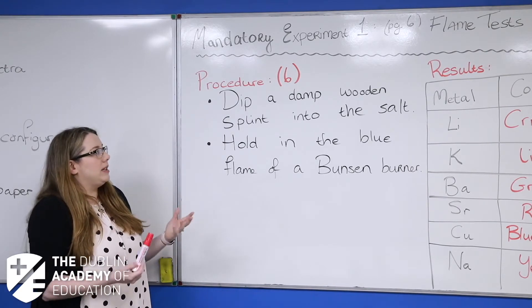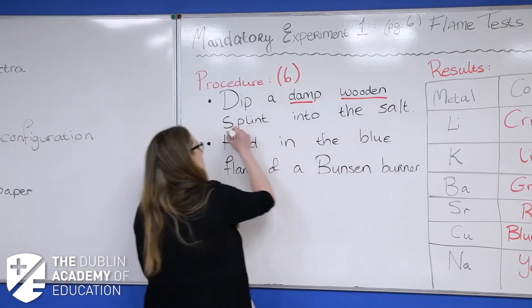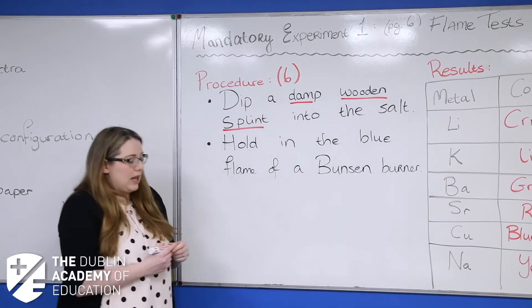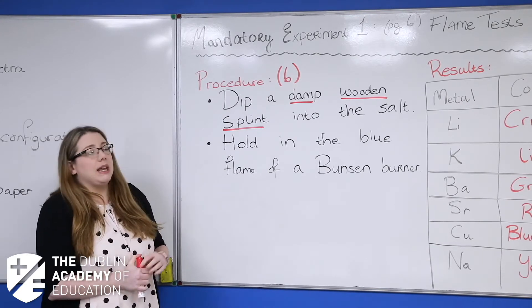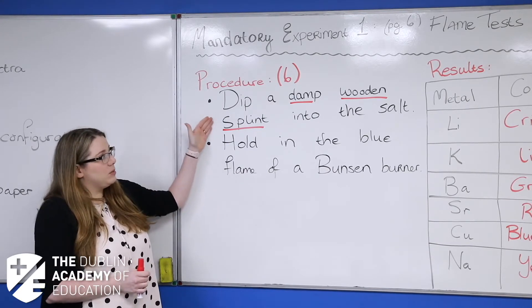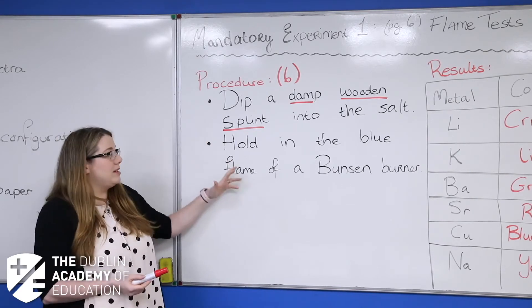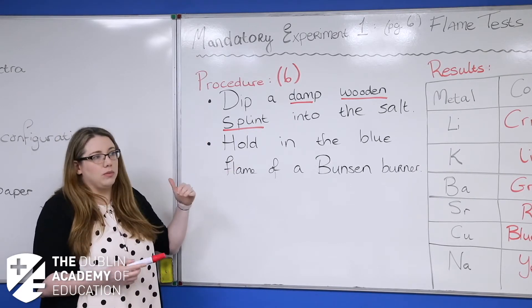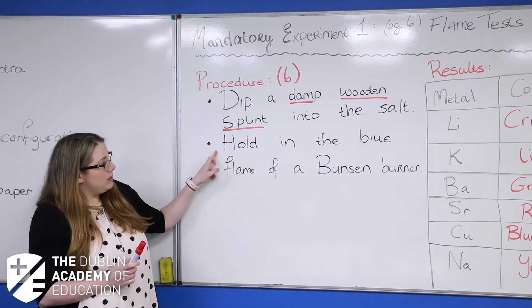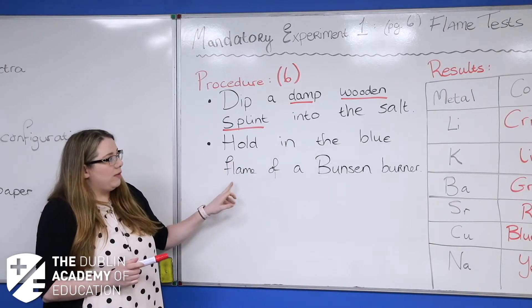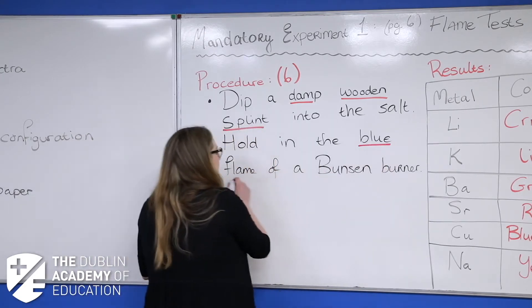For 6 marks, tell me what you did. You dipped a damp wooden splint into the salt — and what will be bolded in the mark scheme is 'damp wooden splint.' It's damp because when you stick the wooden splint in the Bunsen burner, you don't want the splint to catch fire; you only want to see the salt combust. Then you hold the damp wooden splint in the blue flame of a Bunsen burner, and you need to specify the blue flame.